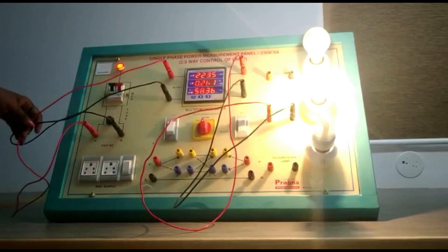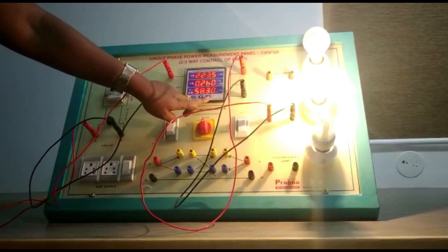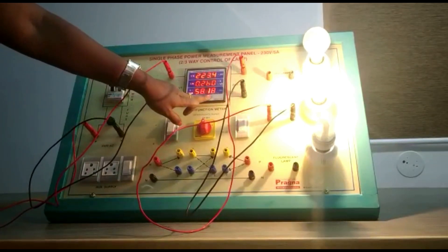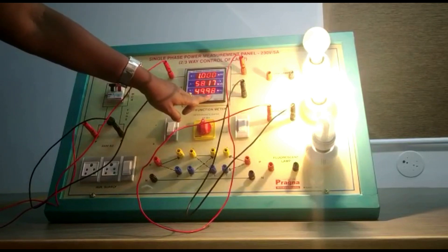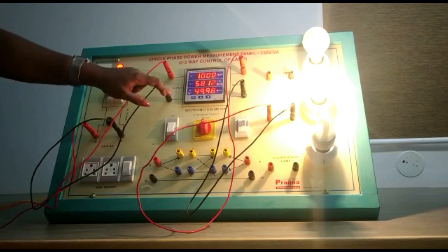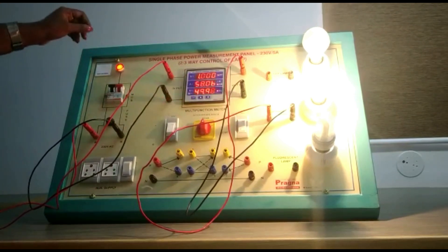There is an arrow mark here which you can notice. Press and hold this for a few seconds and you will be able to see the power factor. As you can see, the power factor is 1 and the frequency is 49.99 hertz.